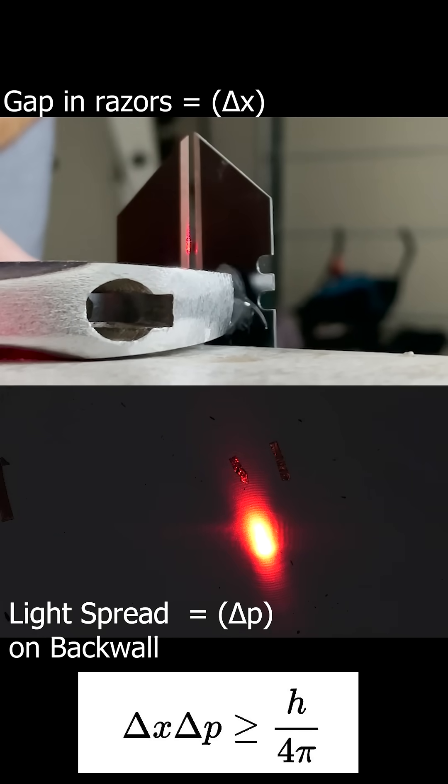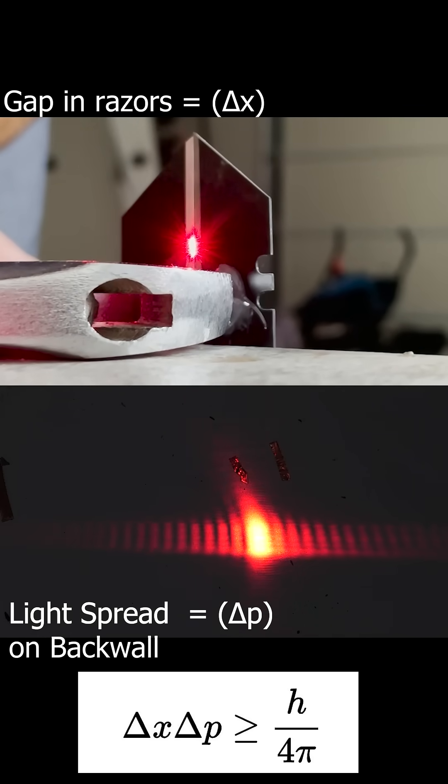The uncertainty principle tells us that for any particle, the variability in position times the variability in momentum is equal to a constant. So if you decrease the variability in x, then the variability in momentum increases.